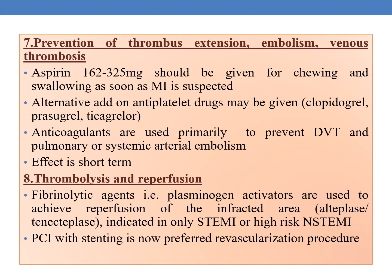For prevention of thrombus extension, embolism, and venous thrombosis, aspirin 162 to 325 mg should be given for chewing and swallowing as soon as MI is suspected. Add-on antiplatelet drugs such as clopidogrel, prasugrel, and ticagrelor may be given. Anticoagulants are used primarily to prevent deep venous thrombosis (DVT) and pulmonary or systemic arterial embolism, and the effect is usually short term.